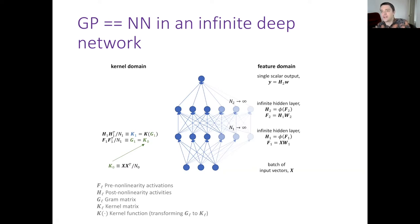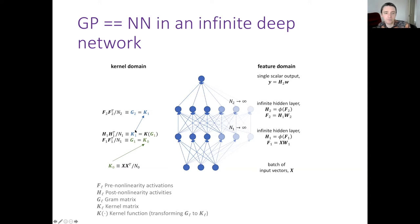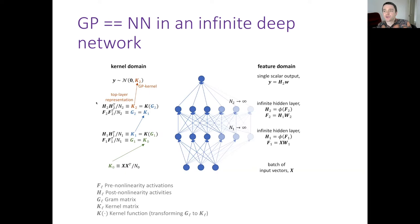Again we compute the gram matrix of the f's, equal to k of the previous kernel, then apply k to get the next kernel — and so on. This top-layer kernel is a training-example-by-training-example matrix describing how similar the network judges each training example to be. That top-layer representation becomes our Gaussian process kernel.